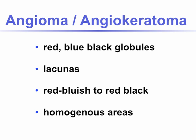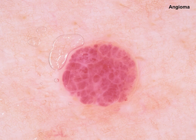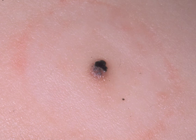Angioma and angiokeratoma: they are red-blue-black globules or lacunae of red-bluish to red-black color. They have homogeneous areas and are sharply demarcated. This is a typical clinical picture of cherry angioma. The dermoscopic view shows homogeneous, large, sharply demarcated globules, very typical for vascular lesions. Sometimes it's not as easy because these vascular lesions could have a thrombosis or partial thrombosis, and congealed blood has the blackest of the black color that you could get.